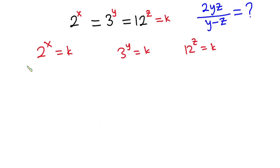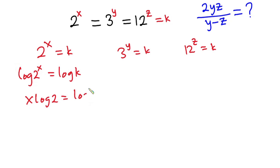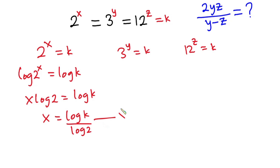Now let's move on to the second approach using logarithms. On the first equation, I'm going to introduce log on both sides. So we have log base 10 of 2 to the power x is equal to log k. Moving x to the front, we have x log 2 is equal to log k. Dividing each side by log 2, we have x is equal to log k over log 2. I'm going to call this equation star.